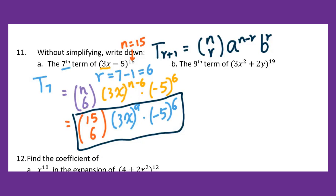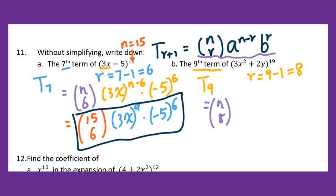For part b, the 9th term means we're looking for t9, and r equals 9 minus 1, which is 8. Now I need to plug into the formula. We get n taken 8 times 3x squared to the n minus 8 power, then times 2y to the n minus 8 power. From the given information, n equals 19.